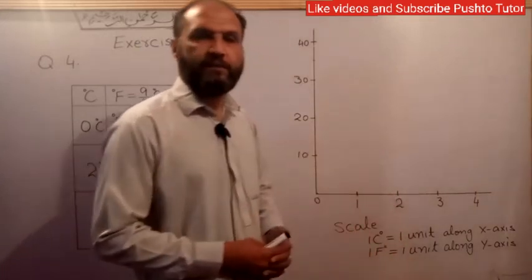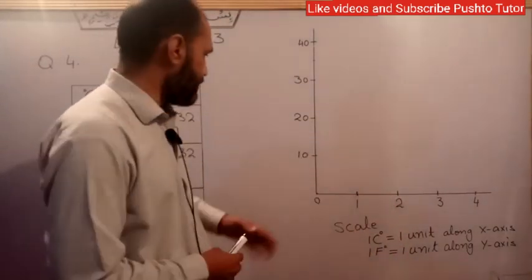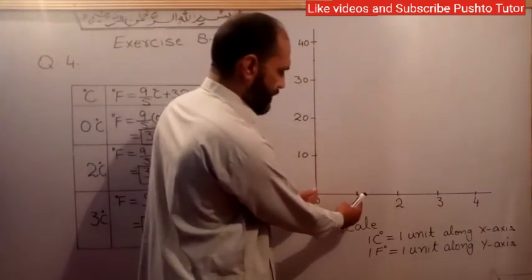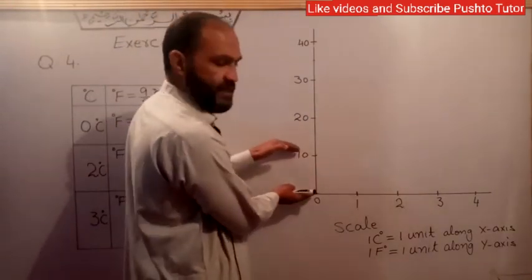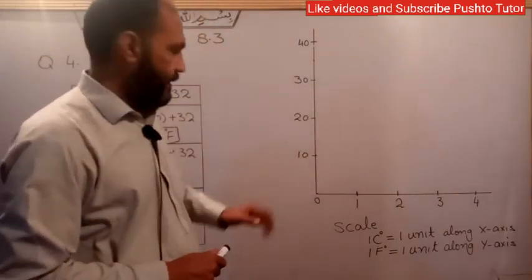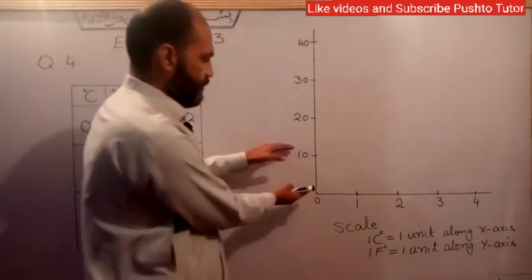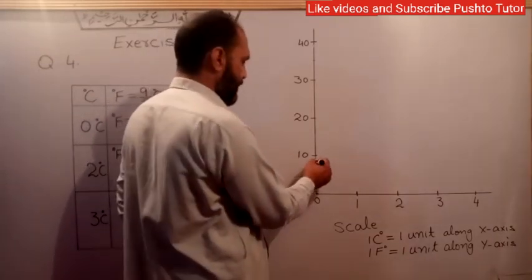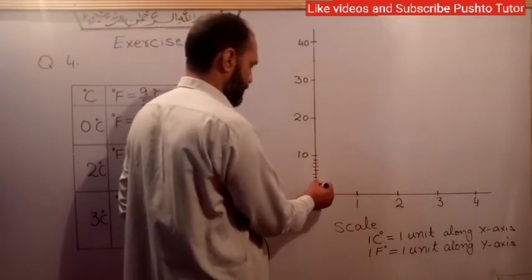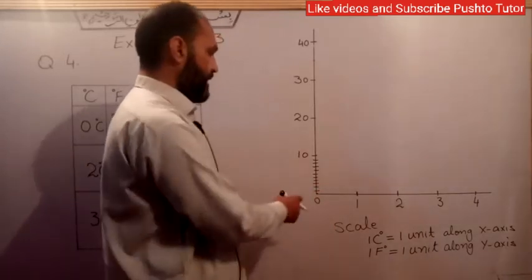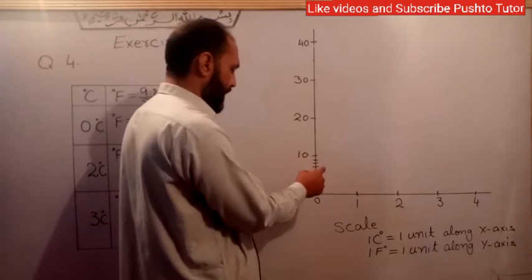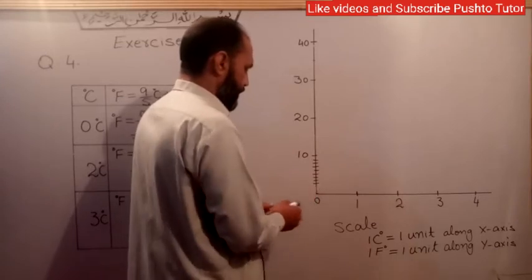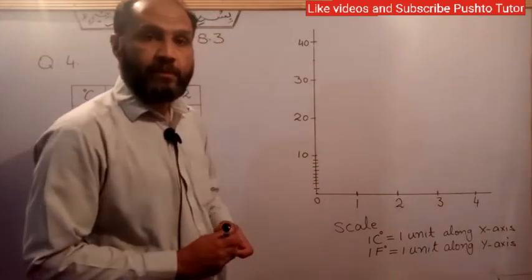Fahrenheit is the same as the y-axis. The x-axis represents the Celsius scale. Each unit on the x-axis corresponds to a certain scale, and the 10-degree interval is mapped to units on the graph.